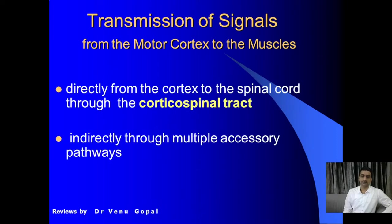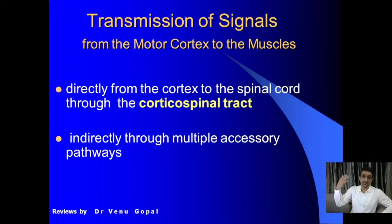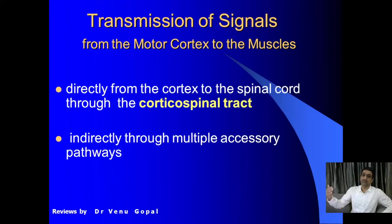To introduce, we have many pathways descending from the brain to the spinal cord so that they can control the motor component — that is, the muscle. Transmission of signals from the motor cortex to the muscle goes uninterrupted, non-stop, in the pyramidal tract or corticospinal tract up to the spinal cord. Then there are many other pathways which indirectly pass through the cerebellum, basal ganglia, and brainstem nuclei — those are the indirect pathways.